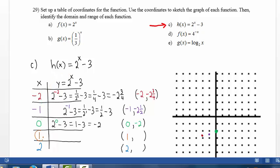When x equals 1, we have 2 raised to the 1 minus 3. 2 minus 3 equals negative 1. We plot the point 1 comma negative 1.